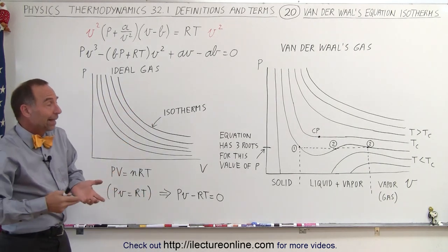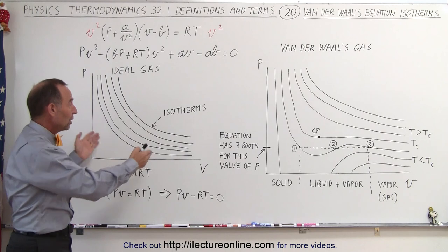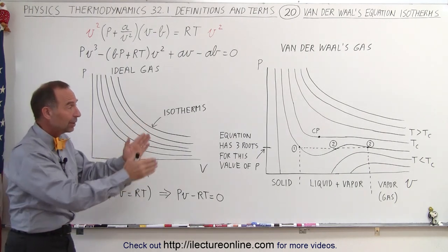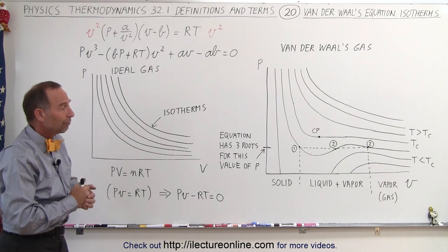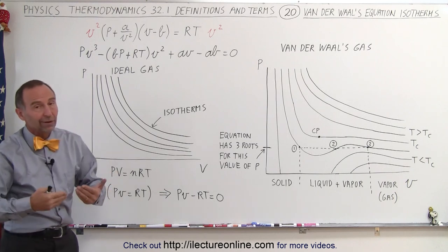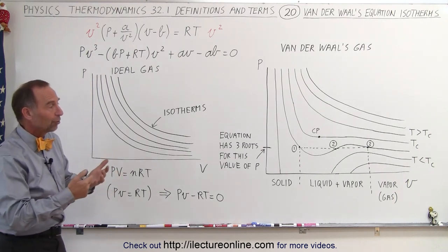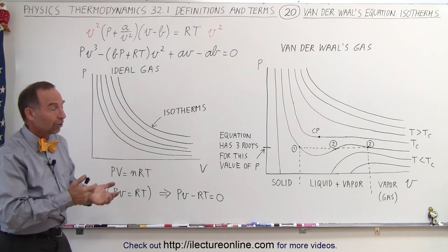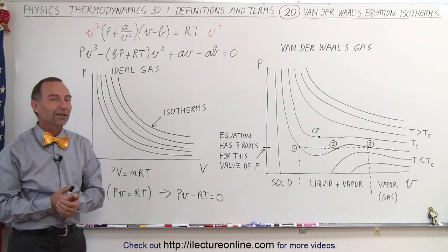So hopefully that helps differentiate between what things look like on a PV diagram for an ideal gas, and what things look like on a PV diagram for Van der Waals gas, or for real gas, because Van der Waals is a pretty good representation of what a real gas does in nature. So hopefully that clarifies it a little bit more.